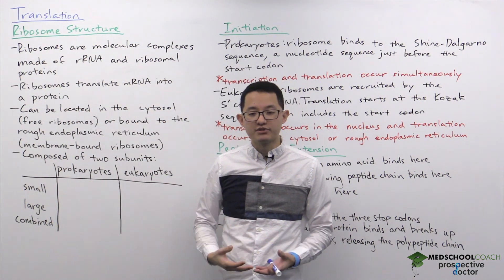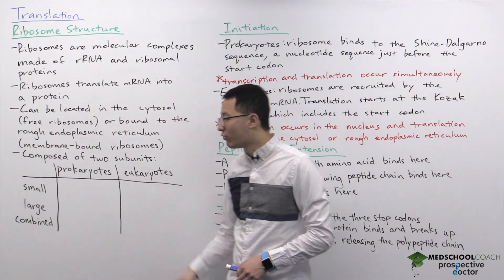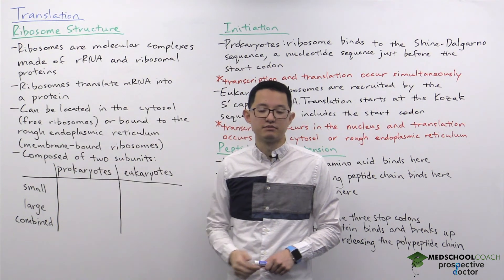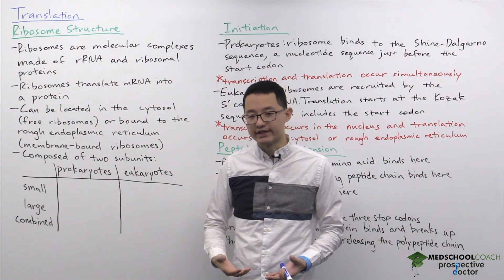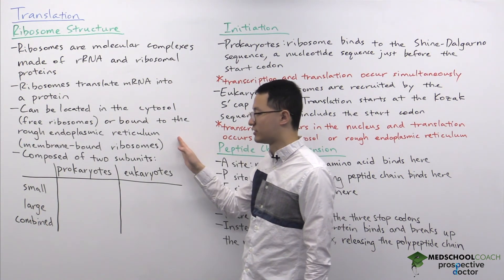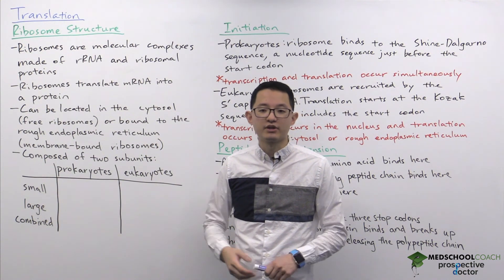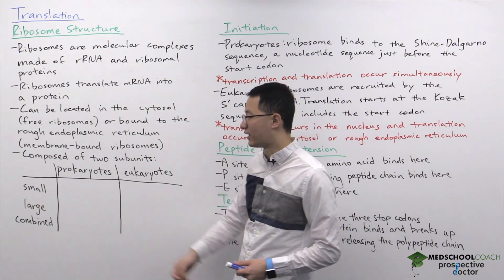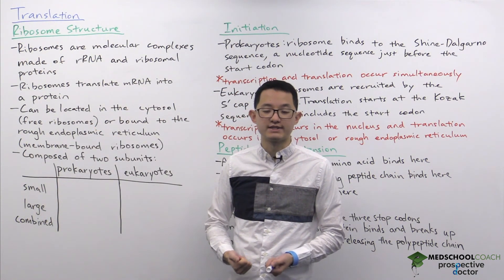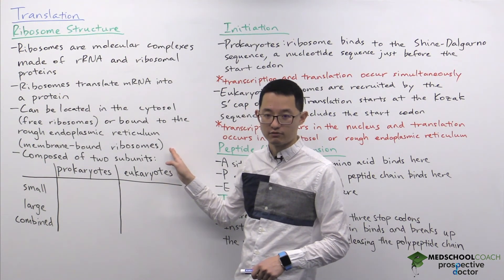Within the cell, ribosomes can be found either in the cytosol as free ribosomes, or bound to the rough endoplasmic reticulum as membrane-bound ribosomes. The type of protein being translated determines the type of ribosome that will be translating it. For example, cytosolic proteins are translated by free ribosomes, whereas membrane proteins as well as secreted proteins are made by membrane-bound ribosomes.